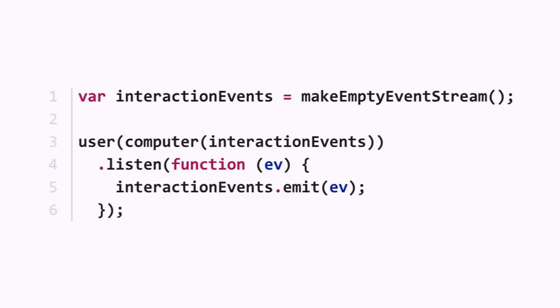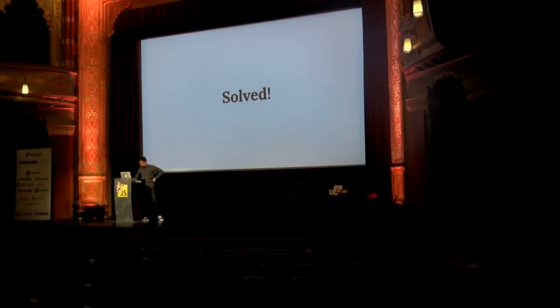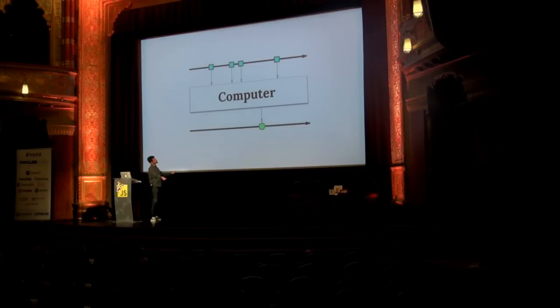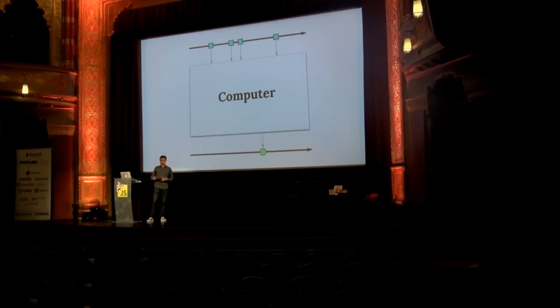We can simplify this code by getting rid of intermediate variables — no magic. We can do that again with screen events and get this. Hopefully now you see something that looks like a fixed point. You can compare b with interaction events and compare g∘f with user∘computer. And it's solved — it wasn't that hard after all. But there's something that still annoys me with this computer function, because in reality it would be a huge function — thousands of lines of code doing networking, rendering, calculations, and whatnot.